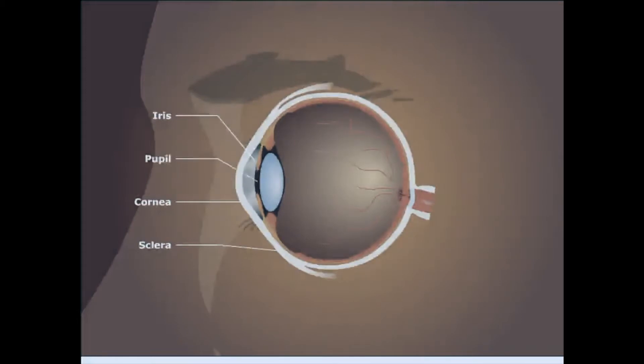The pupil is an opening in the iris that allows light to enter the eye. The lens is a flexible, transparent structure that focuses light on the retina. The vitreous humor is a clear gel that occupies the space between the lens and the retina. The retina is a light-sensitive tissue which lines the back of the eye. It absorbs light and sends a signal to the brain.